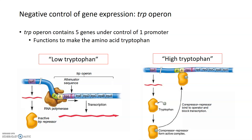It's important to notice that both the trp and lac operons are examples of negative control, because they both involve repressor proteins, but they work through different mechanisms. That seems like a perfect exam question — to compare and contrast these two forms of operon and the mechanisms behind them.